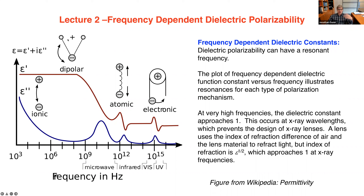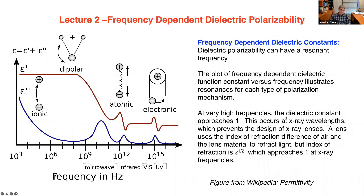At very high frequencies, atoms cannot move, molecules cannot rotate, bonds cannot stretch — in fact, even electrons cannot respond. So at really high frequencies, the dielectric of that medium is insensitive and approaches one, the permittivity of vacuum. The result is that X-rays, which have very high frequencies, are not easily modified by the dielectric medium. This makes it difficult to design X-ray lenses. A lens takes advantage of the dielectric properties of a medium at the frequency of incoming light, and the difference in dielectric constant allows the material to bend that light — but X-rays are not susceptible to that.